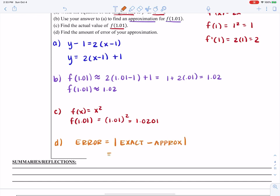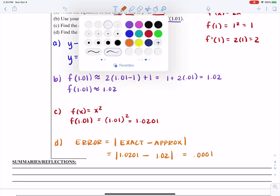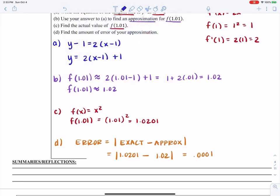So I could find f of 1.01 by going 1.01 squared, which would give us 1.0201. And what I want to know is how close were we in our approximation? And in fact, we're pretty close because I can find the error by finding the absolute value of our exact value minus our approximation.